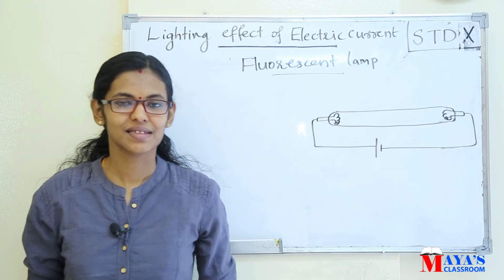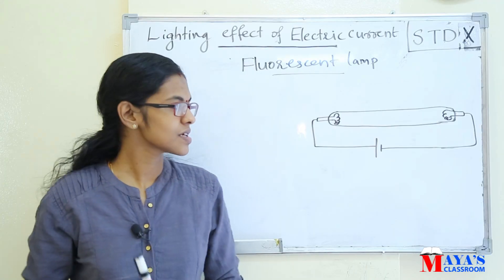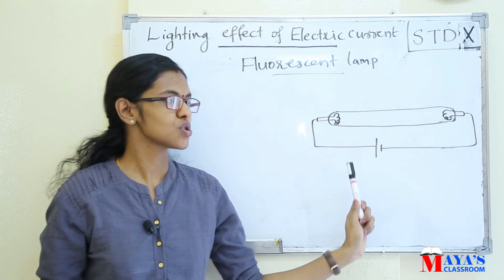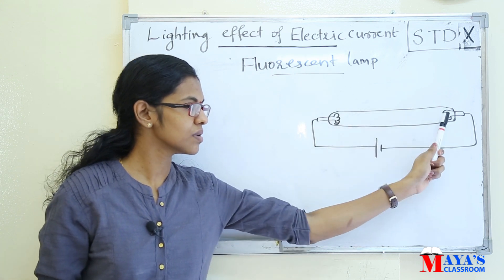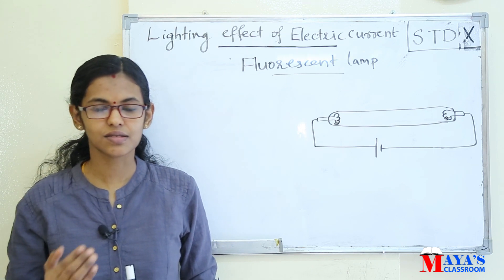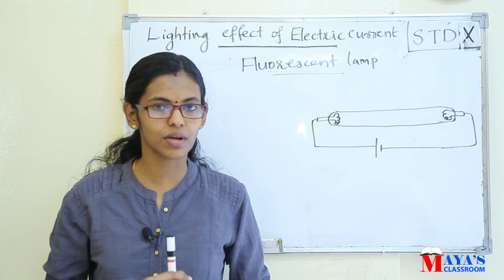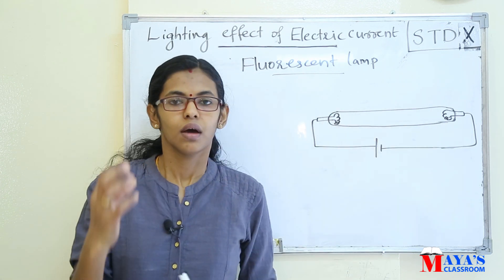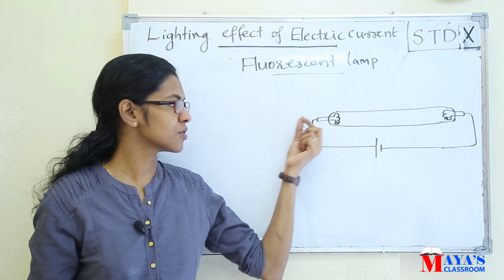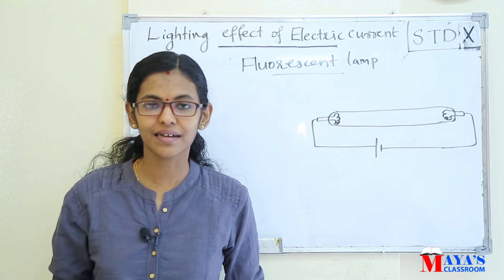The next lamp is the Fluorescent Lamp. The fluorescent lamp is a tube light. It is a type of discharge lamp with two electrodes. The main part of the fluorescent lamp is a glass tube. Two coils are present and coated with thorium oxide. The tube contains mercury vapor.